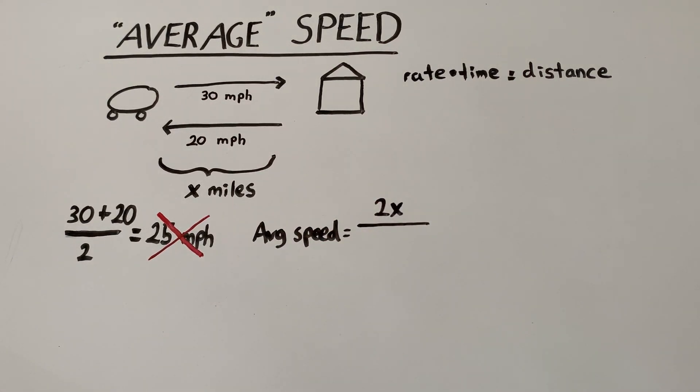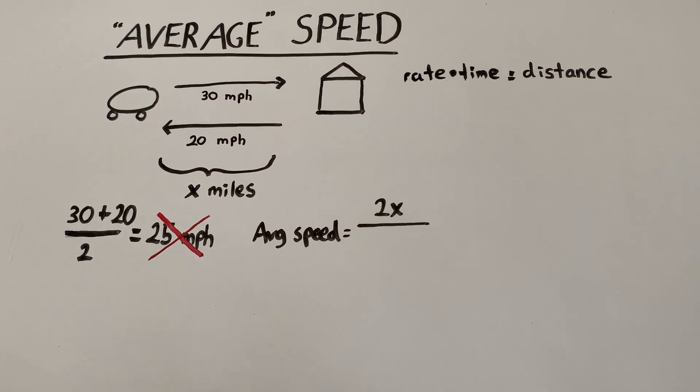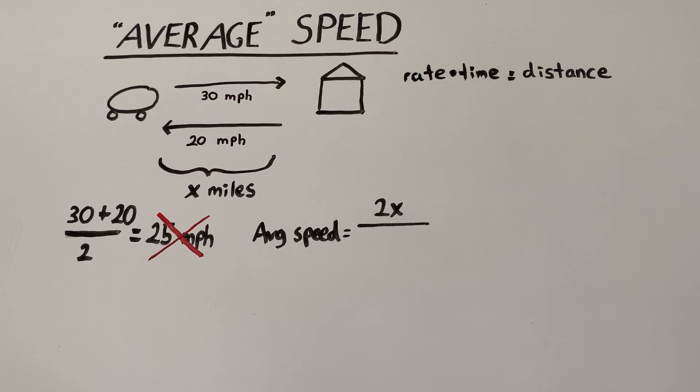So all we have to do now is find the total time. The total time would be the time it takes for me to go from my place to grandma's place and the time it takes from grandma's place to my place. So are we given a time? Well, yes and no. We're not told the time directly, but we can find the time using this equation. So if we want to find time, we're going to have to rearrange this a little bit. So we find that time is actually equal to distance divided by the rate.